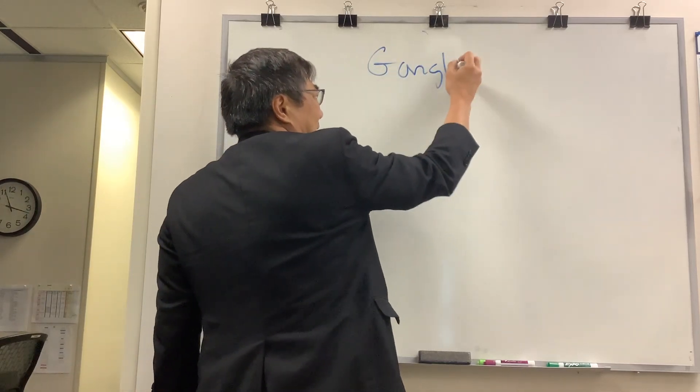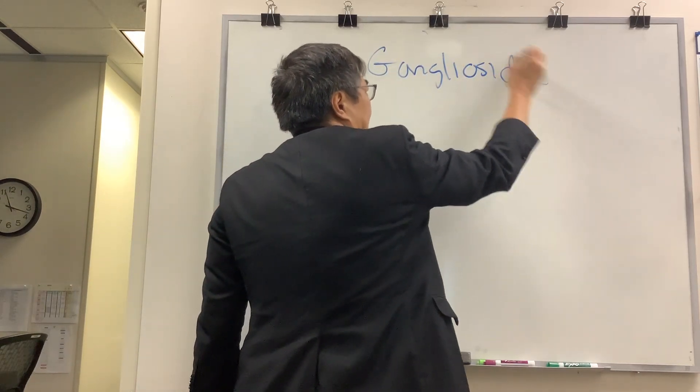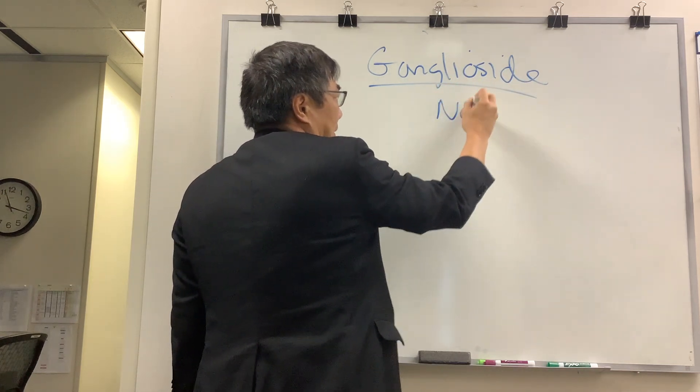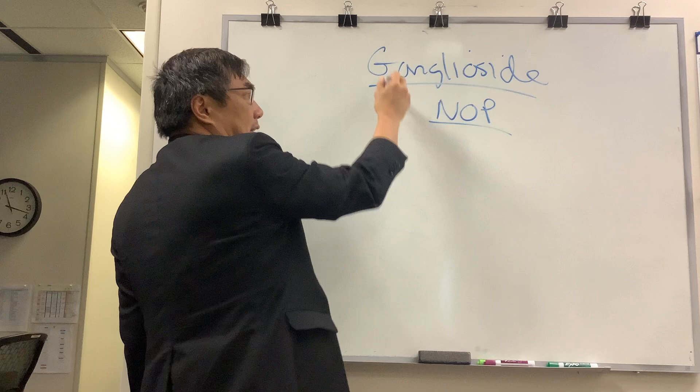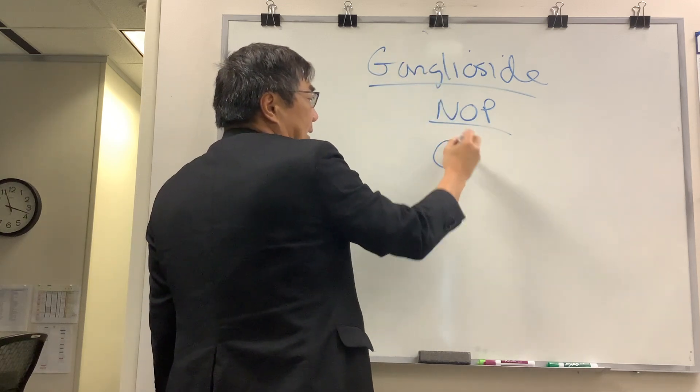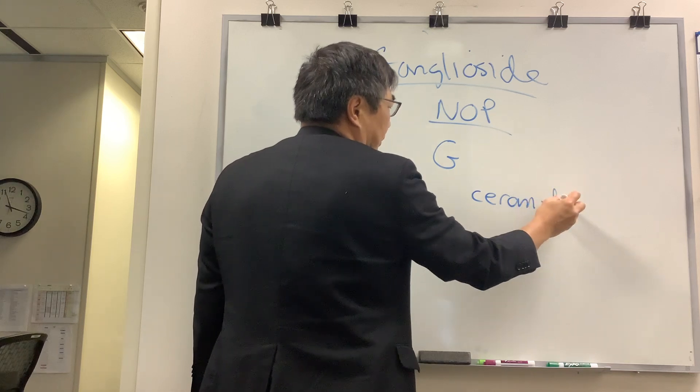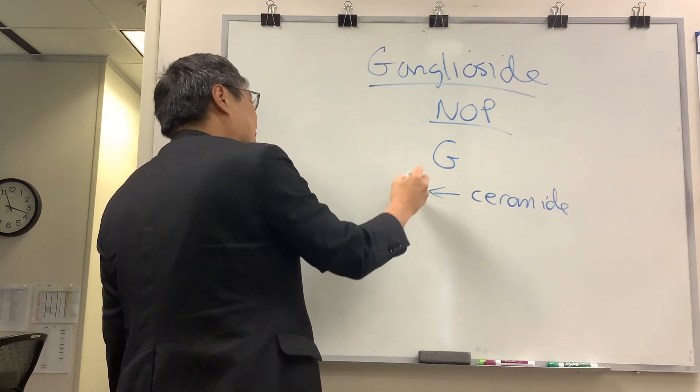We're going to be talking about how the ganglioside and the antibodies against gangliosides produce neuroimmune disease. The ganglioside is a combination of the ceramide core molecule plus a series of sugars.